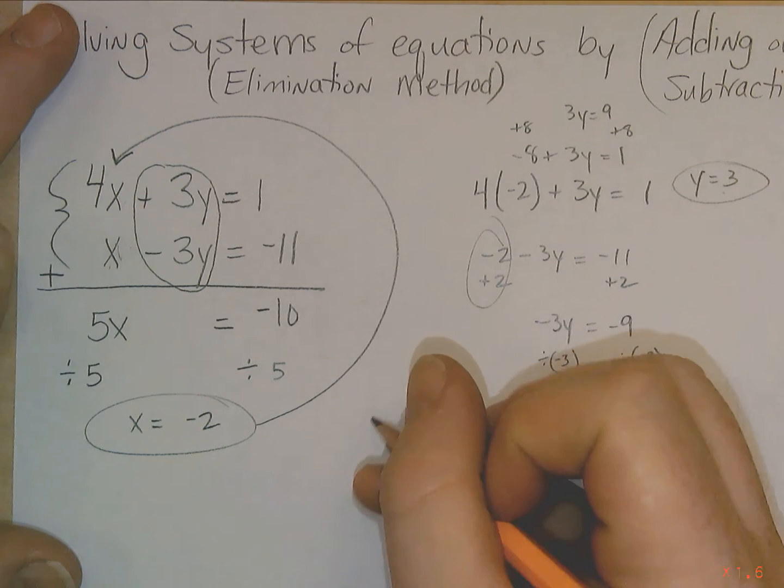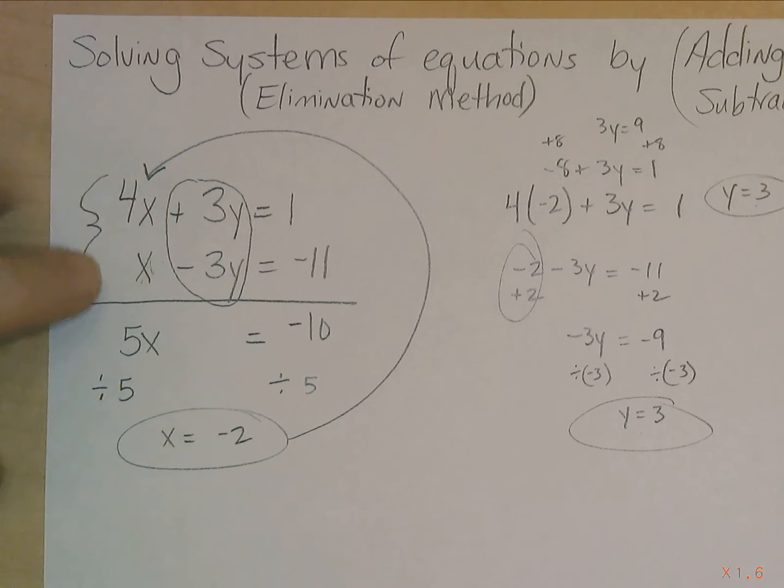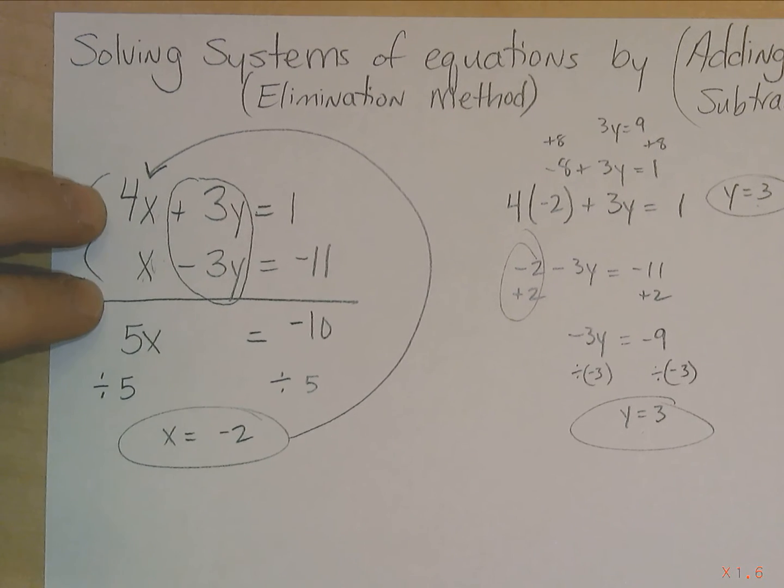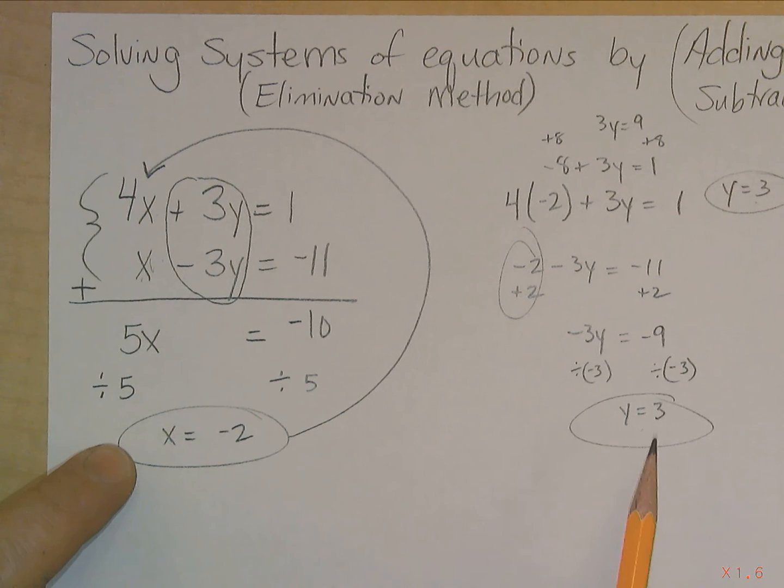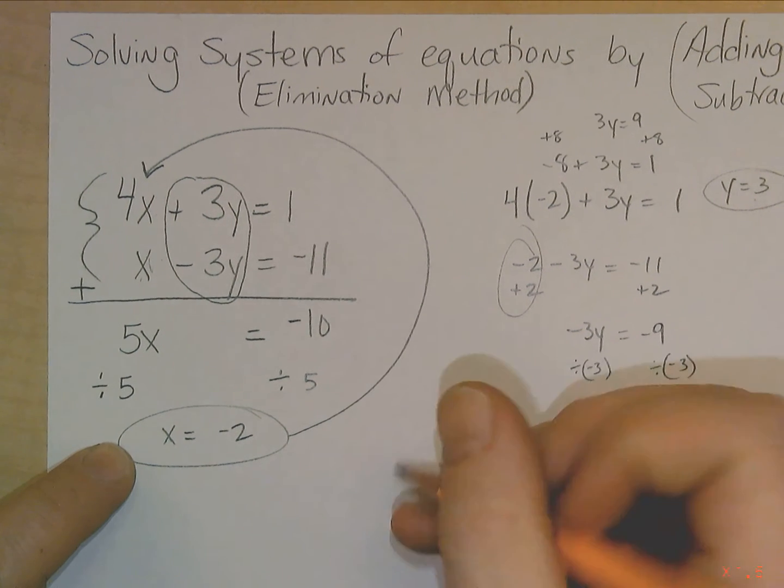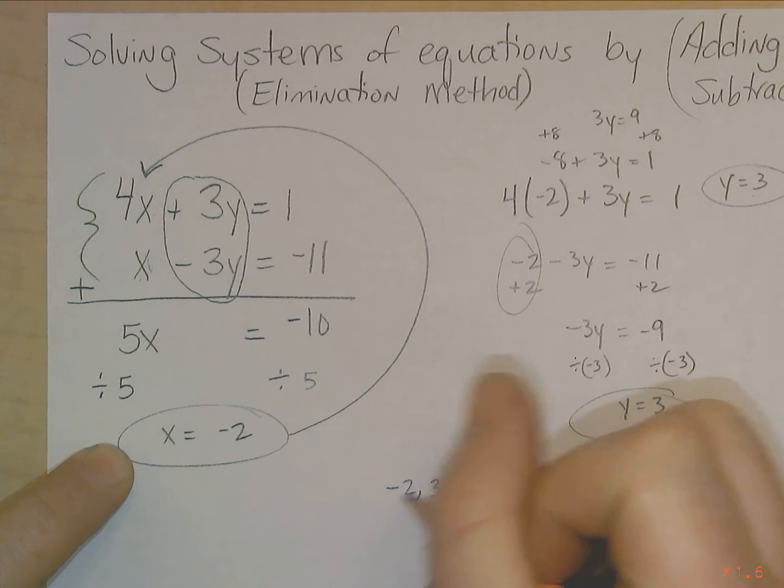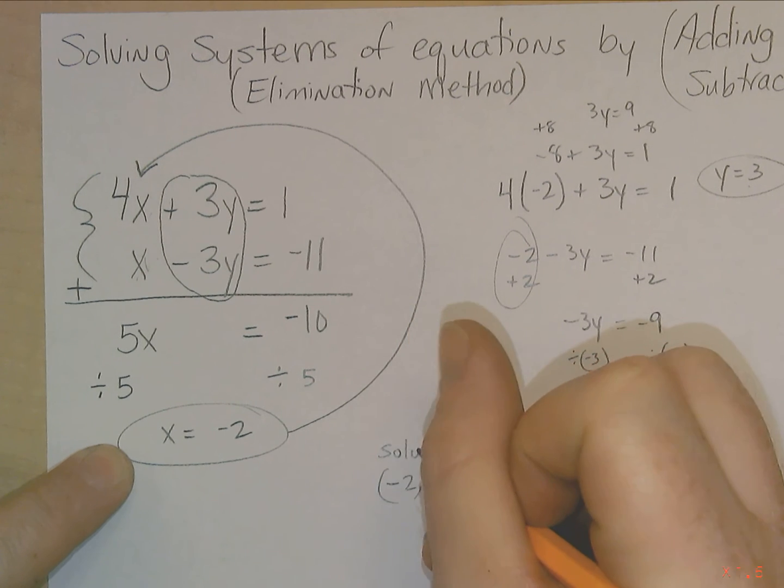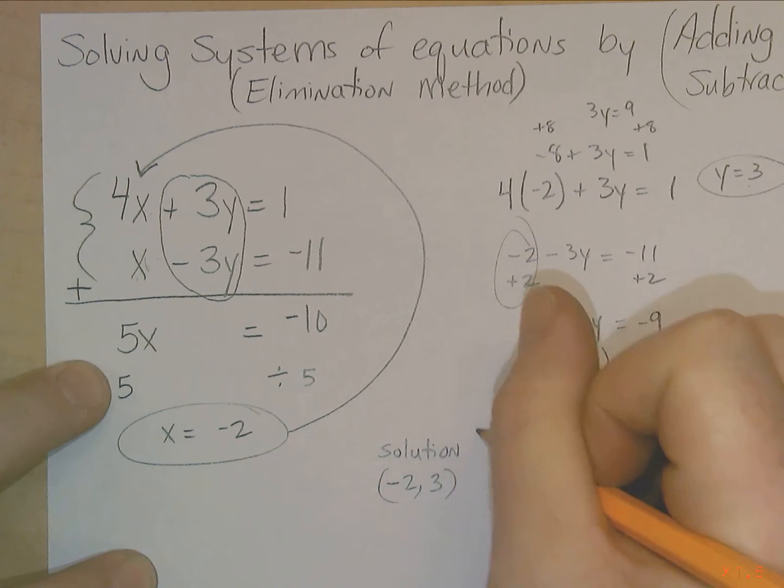So you can see that it doesn't matter if you plug it in here or plug it in here. It's going to work out either way. You're still going to get y equals 3. So the solution, remember the solution is where both these lines cross each other on the coordinate plane. At negative 2, 3 is where they're going to cross. That's going to be the solution.